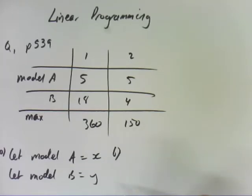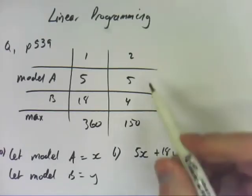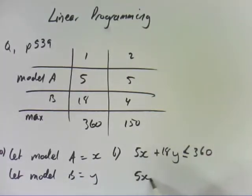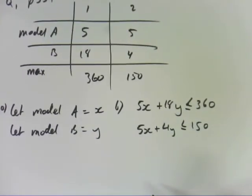The next step is to write the constraints as linear inequalities. So this table has the constraints. So if model A is X and worker 1 spends 5 minutes on that so it's 5X. So 5 times the number of model A's he creates plus 18 times the model B's he creates must be less than or equal to 360 minutes. The second constraint, worker 2, is 5X plus 4Y must be less than or equal to 150. Now chances are there are other constraints that are just implicit in the question. You cannot have a negative number of model A's built and a negative number of model B's built. So X must be greater than or equal to 0 and Y must be greater than or equal to 0. So there's our constraints.